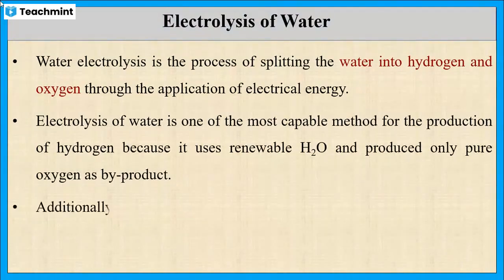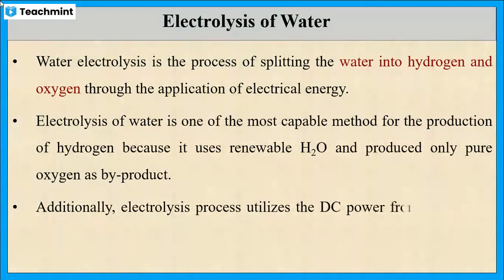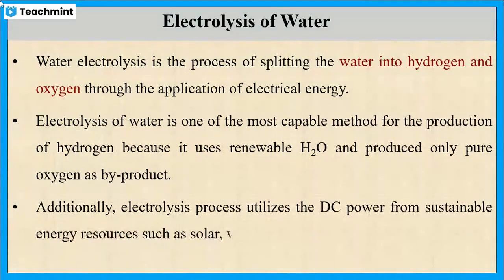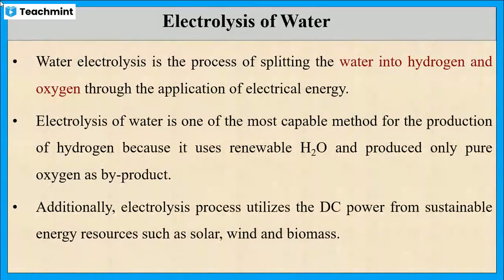Further, for carrying out the electrolysis of water, it requires DC power, which can be drawn from sustainable energy sources such as sunlight, wind and biomass.